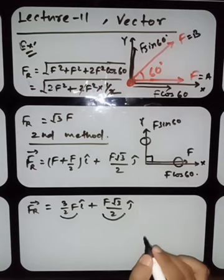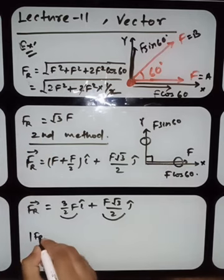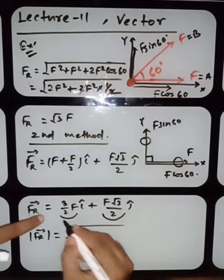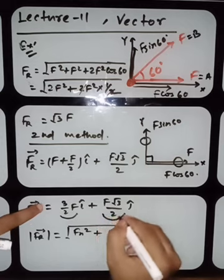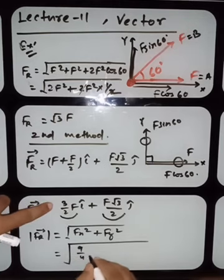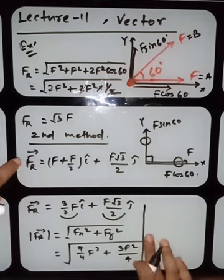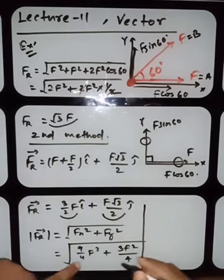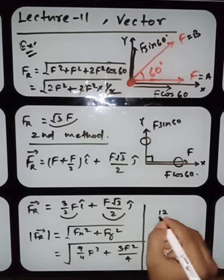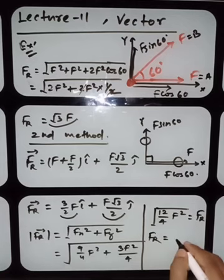The magnitude is |F_r| = √((3f/2)² + (f√3/2)²) = √(9f²/4 + 3f²/4) = √(12f²/4) = √(3f²) = √3 · f. So both methods give the same answer: the resultant magnitude is √3 · f.